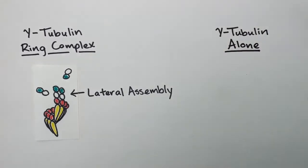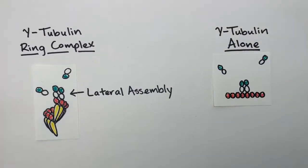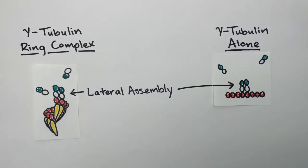Interestingly, gamma tubulin itself forms laterally associated arrays, even in the absence of other proteins. We used these arrays to study the nucleation ability of gamma tubulin alone.